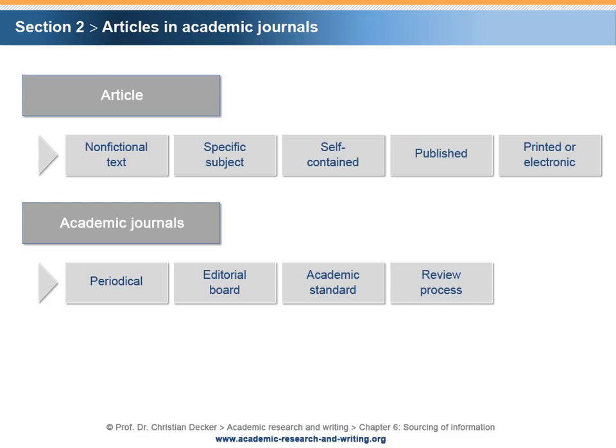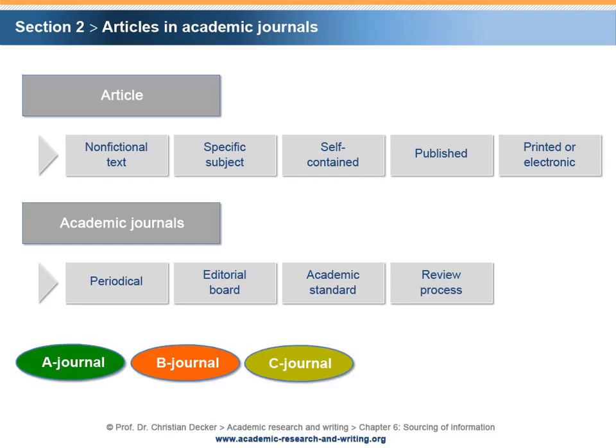The rigor of the review process determines, inter alia, the quality level of the journal. Informally, one refers to academic journals with the highest quality as A journals. In this sense, also B journals, C journals, D journals, E journals, etc. are distinguished.